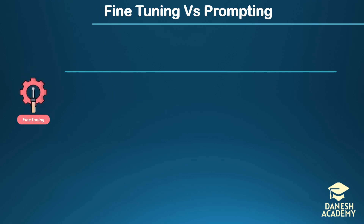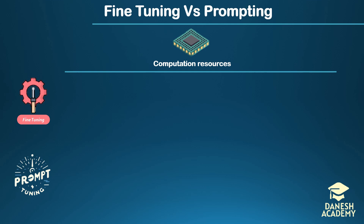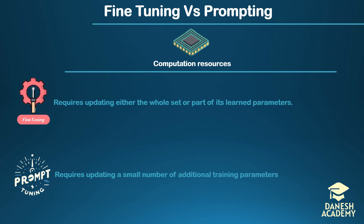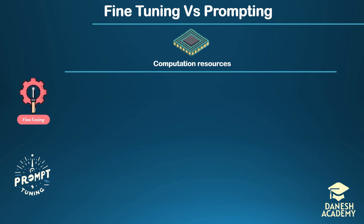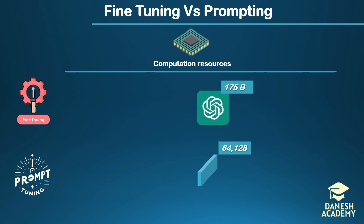Let's compare fine-tuning foundation models versus prompt-tuning paradigms. In terms of computation resources, fine-tuning a foundation model requires updating either the whole set or part of its learned parameters. In contrast, prompt tuning only requires updating a small number of additional trainable parameters — typically less than 1% of the model's total parameters. For comparison, GPT-3 possesses 175 billion parameters, and even partial fine-tuning methods involve updating a large number of parameters. The number of trainable prompt vectors is typically 64 or 128, each with the size of the foundation model's input embedding space.